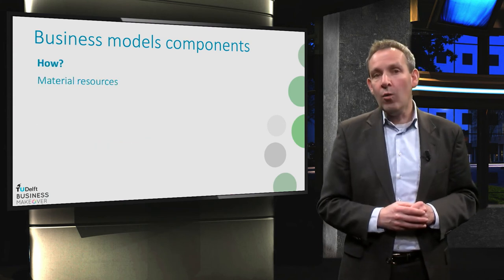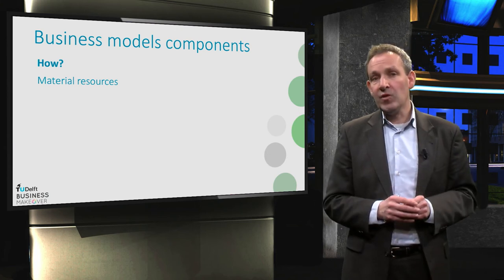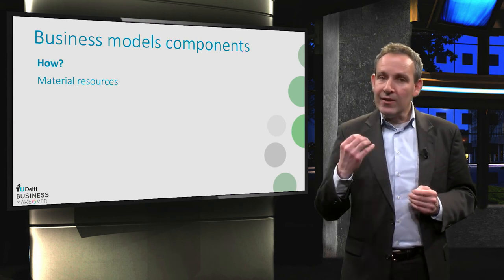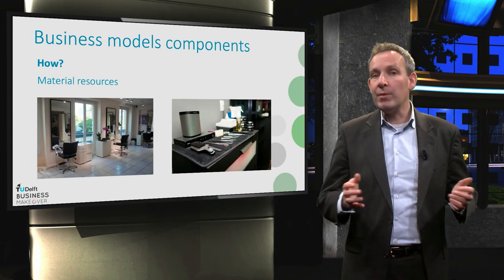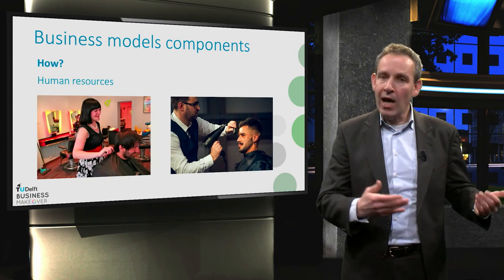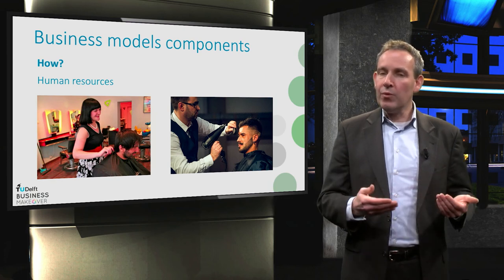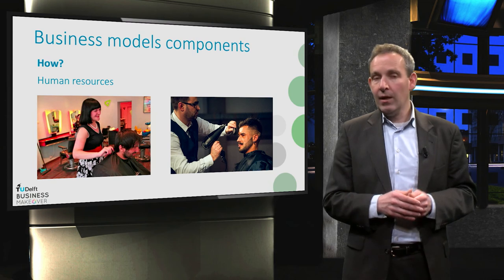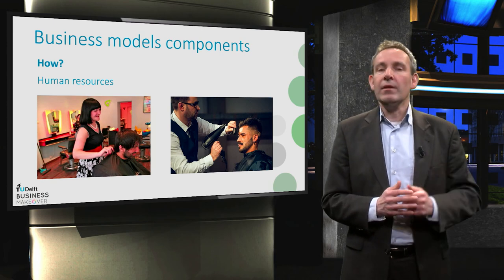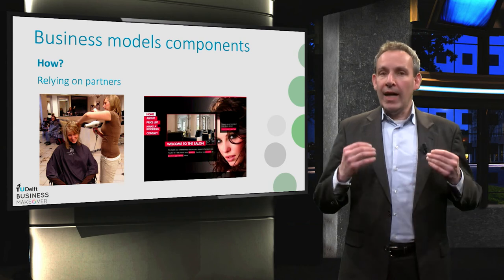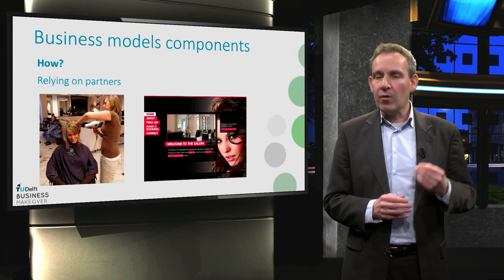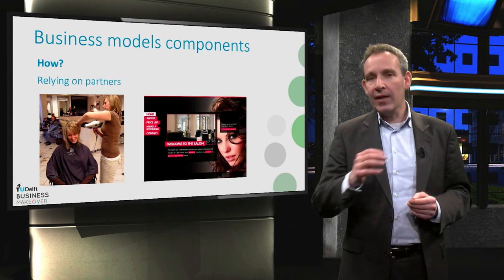The third question is how — how do you create, produce, and distribute your offering? You probably need resources like space, machines, and technologies. Think about the hairdressers: they need a space, scissors, chairs, and maybe hairdryers. And you'll need human resources — in the case of the hairdressers, that's barbers and hairdressers. But maybe you also need a website so people can make their appointments online. You may control all these resources yourself, but you may also have to rely on partners. The hairdresser might outsource the website or have vacancies filled by a specialized temp agency. So the how question is all about how you organize production and delivery of value.